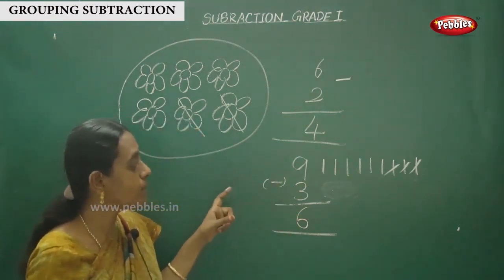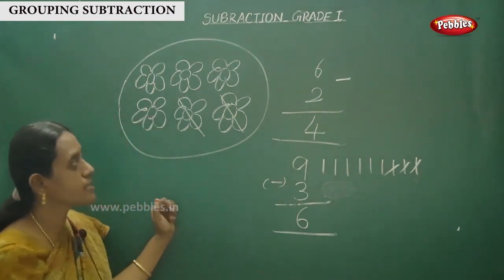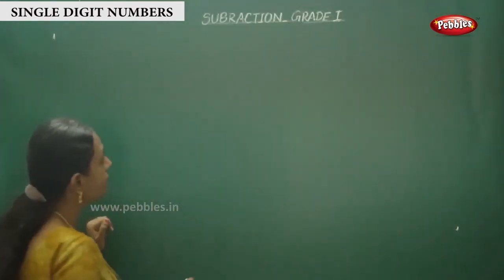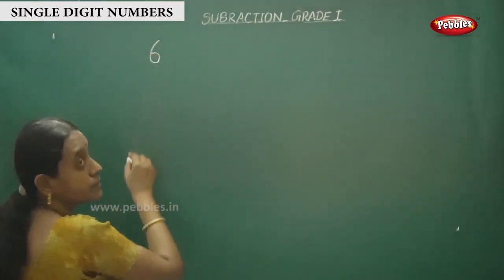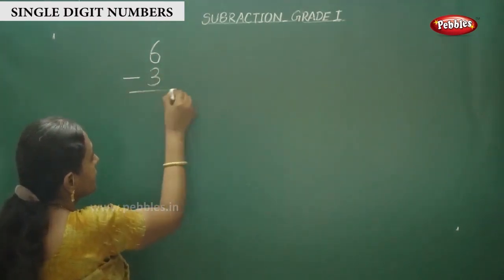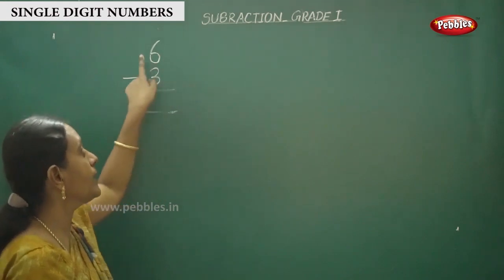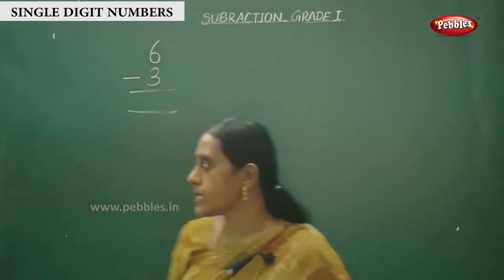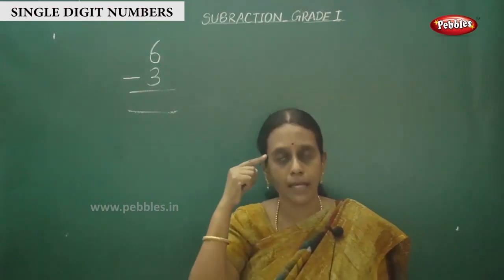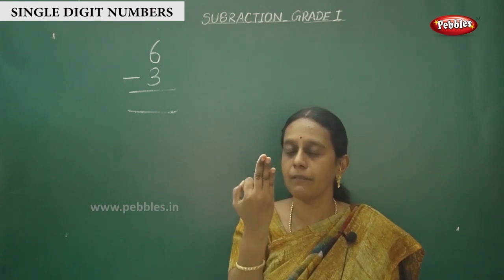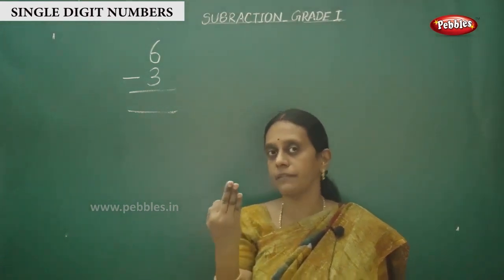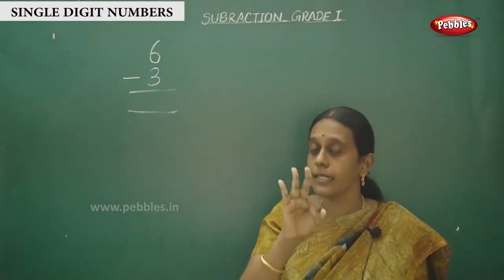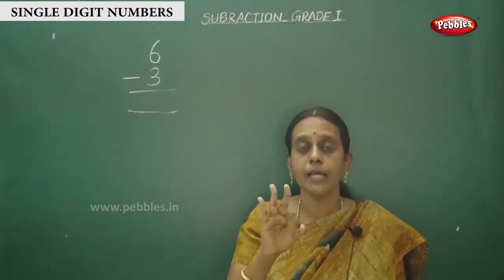Let me see another method of subtraction. Okay children listen: here the number is 6 minus 3. You have to keep the first number in your mind — 6 in the mind. The next number is 3, so 3 on your fingers. Similar to addition, but in subtraction you say the before number.